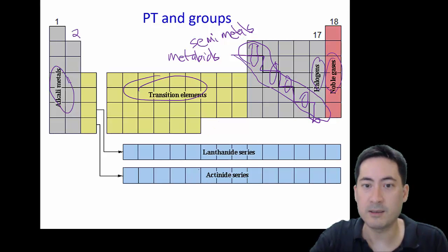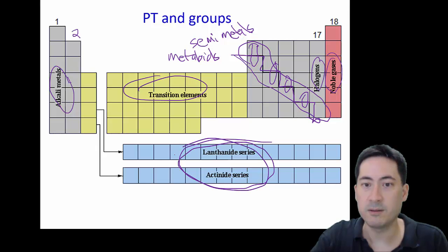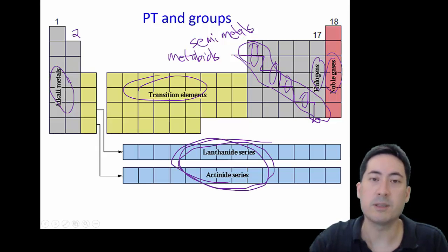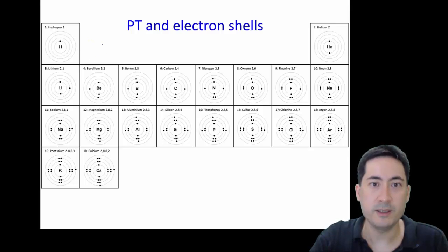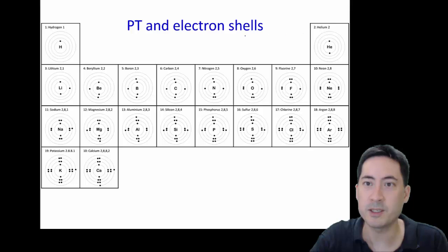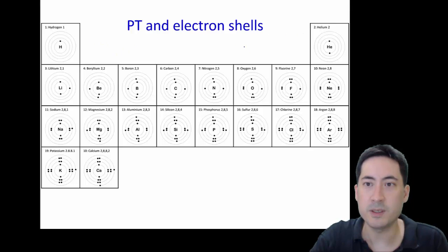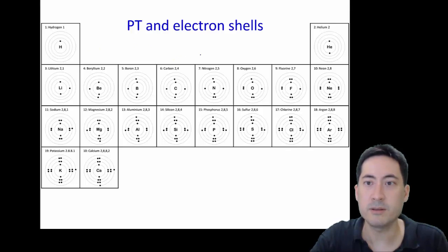The lanthanide and actinide series are not in your syllabus, so I don't think they'll ask you a question on that. Out of frustration, I've looked for years for a good periodic table that shows the shells, and I actually made this one myself. The reason is that it's extremely important to understand why things gain or lose electrons.